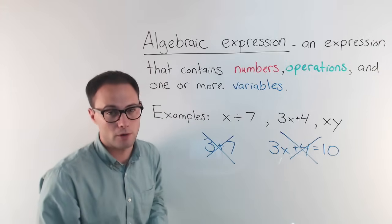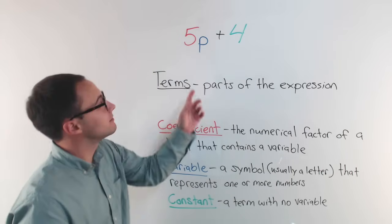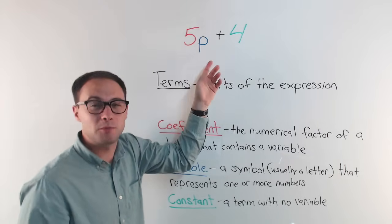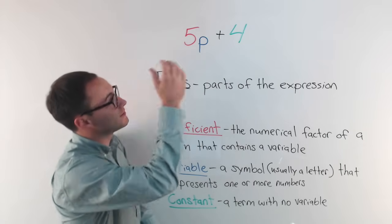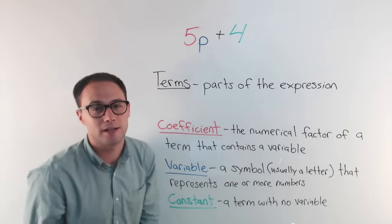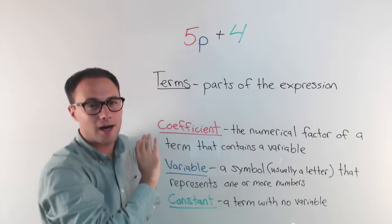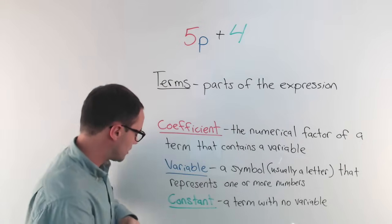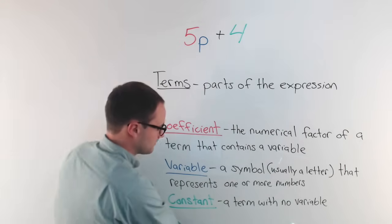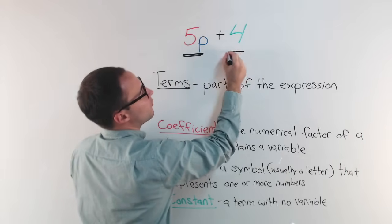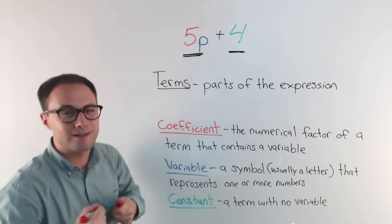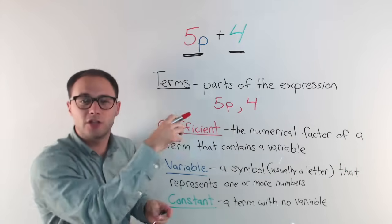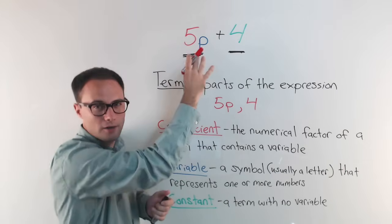Let's talk about some more vocabulary words. Here is an algebraic expression: 5p plus 4. We have addition, and 5p means 5 times p, so we have multiplication. We have numbers and a variable, so it's an algebraic expression. Now let's talk about the different parts. First are the terms — the terms are just the parts of the expression. In this case, we have two terms: 5p and 4. You just take out the operations and list the parts of the expression.